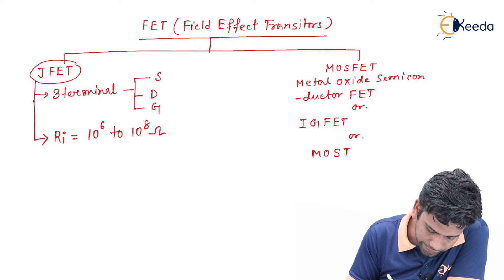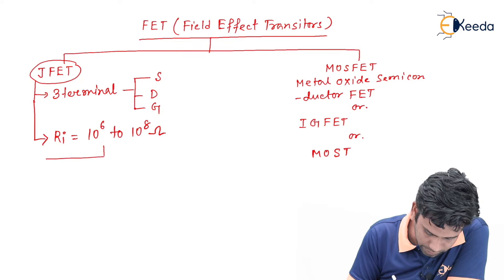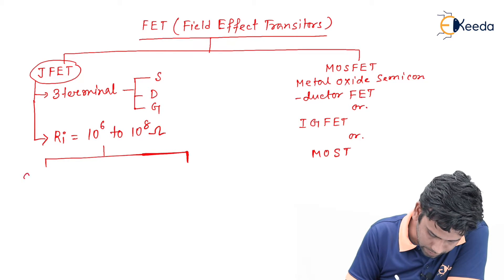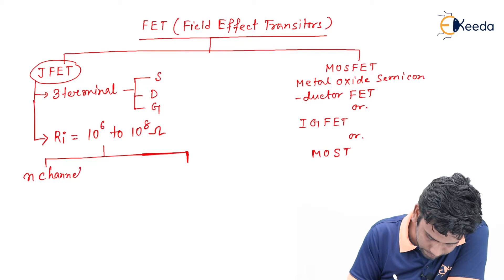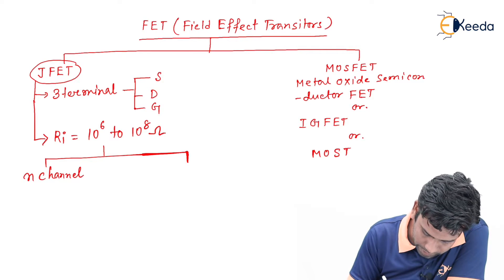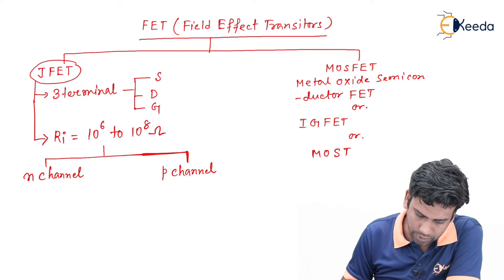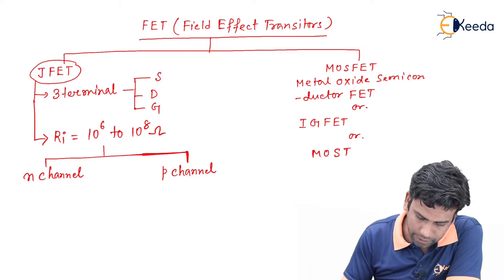This JFET can be classified into two groups. The first one is N channel JFET and the second one is P channel JFET.